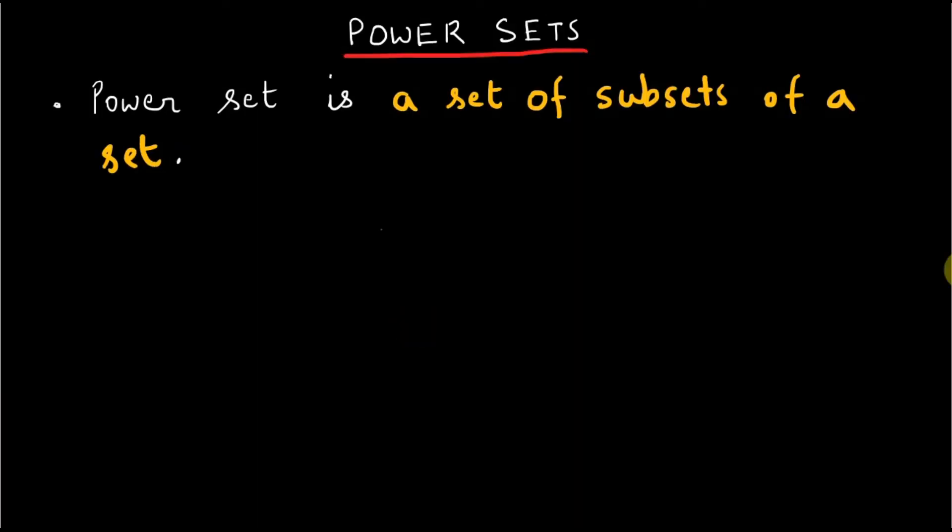Now the question comes to our mind. How many subsets can we make from a given set? This kind of set which contains only subsets of a set is called its power set.